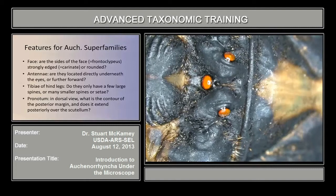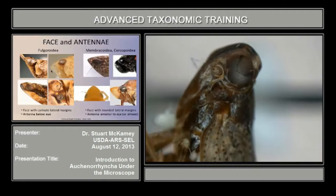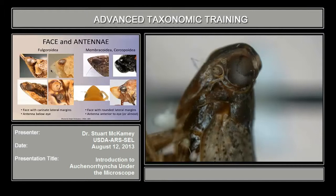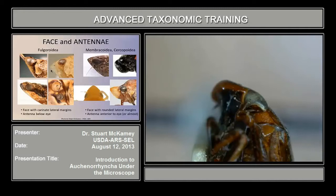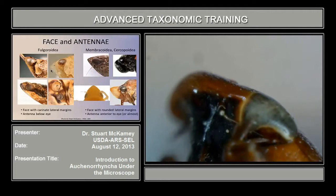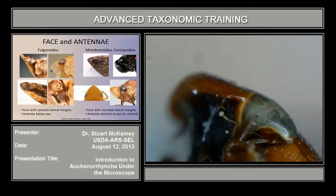Going to the second slide, we look at some examples. The Fulgoroidea have a carinate edge of the face or frontoclypeus — a sharp edge or keel — and the antennae are directly beneath the eyes. This contrasts with Membracoidea and Cercopoidea. In this leafhopper, you can see that the side of the face is rounded, and the antennae is further forward — sometimes it's underneath the edge of the eye, but never directly underneath the eye. This carina visible in this specimen is actually a longitudinal cleft over the antennae, not the vertical edge on the side of the face as in Fulgoroidea.